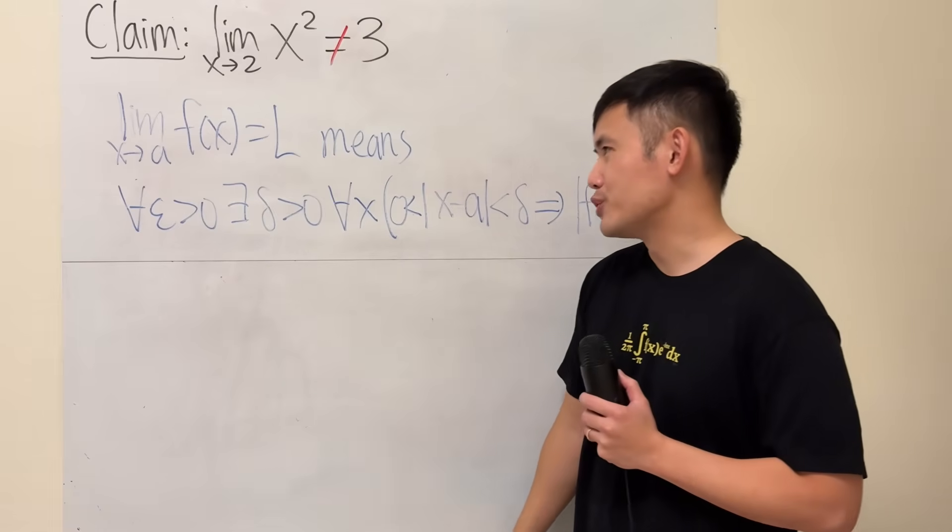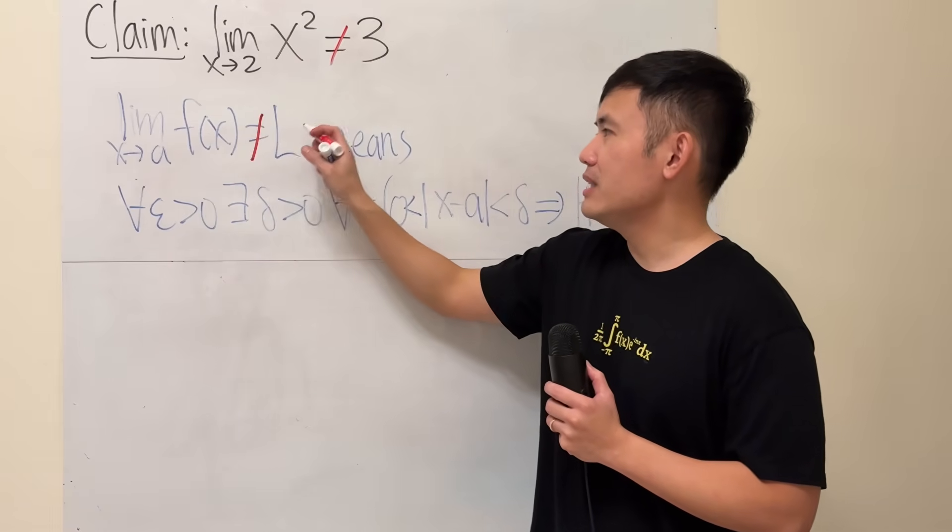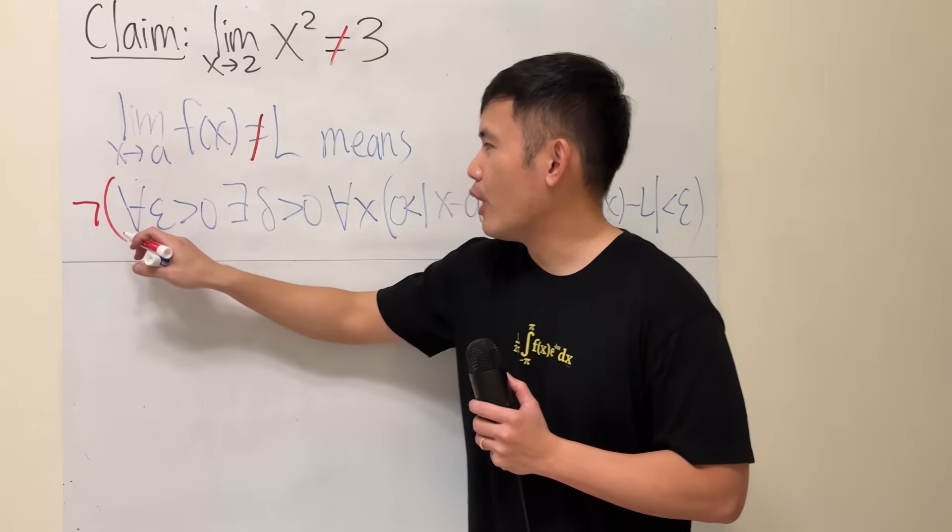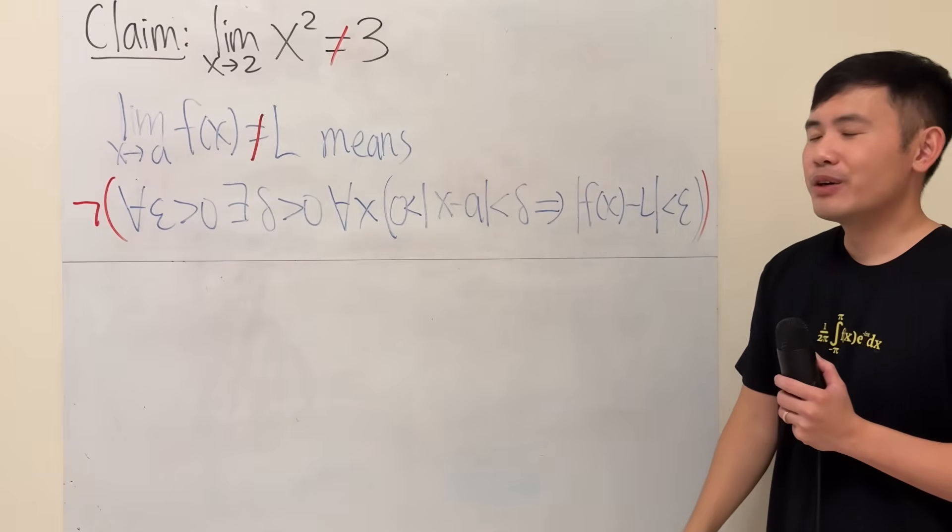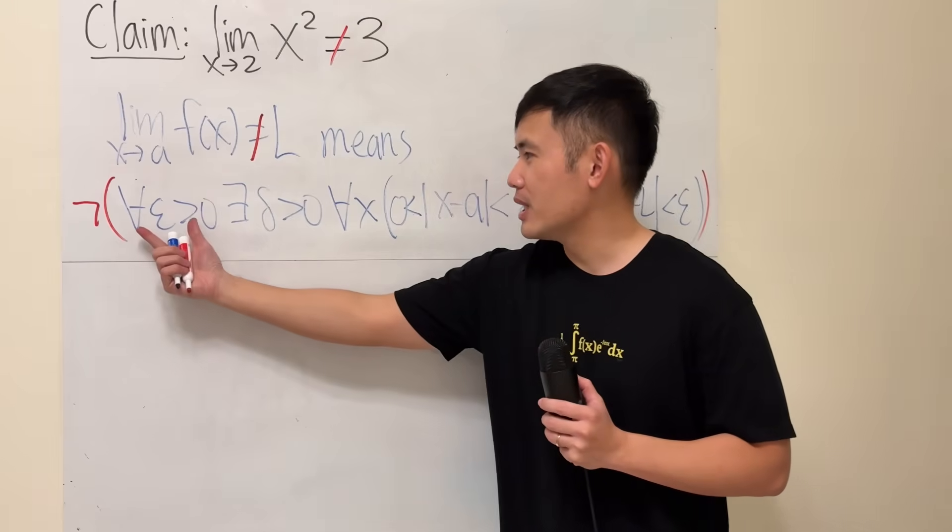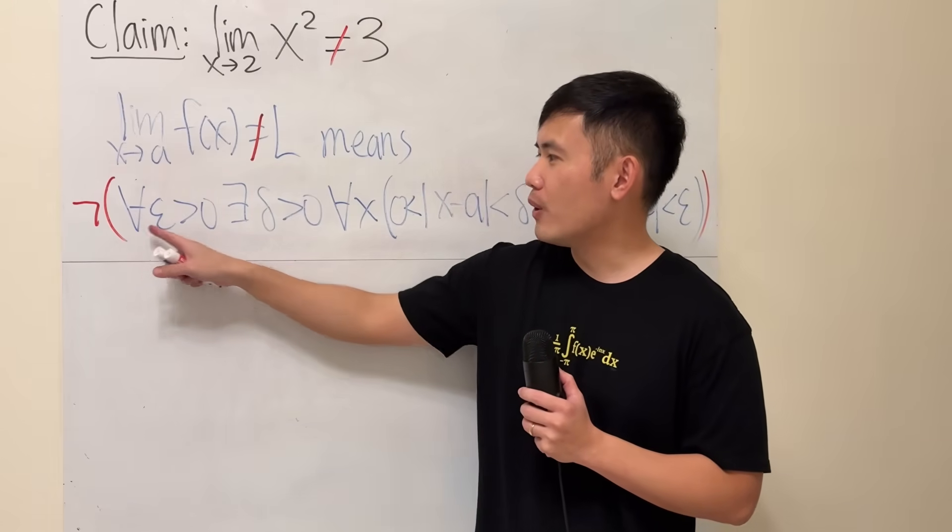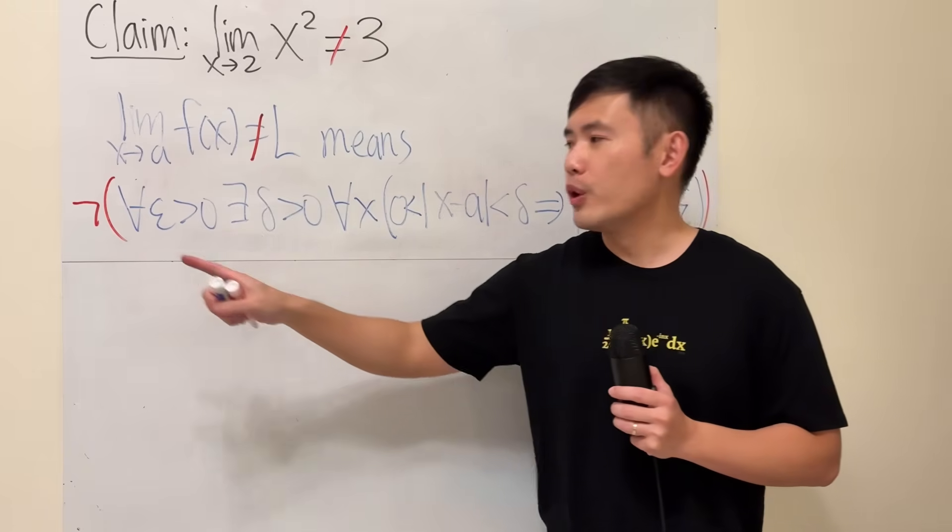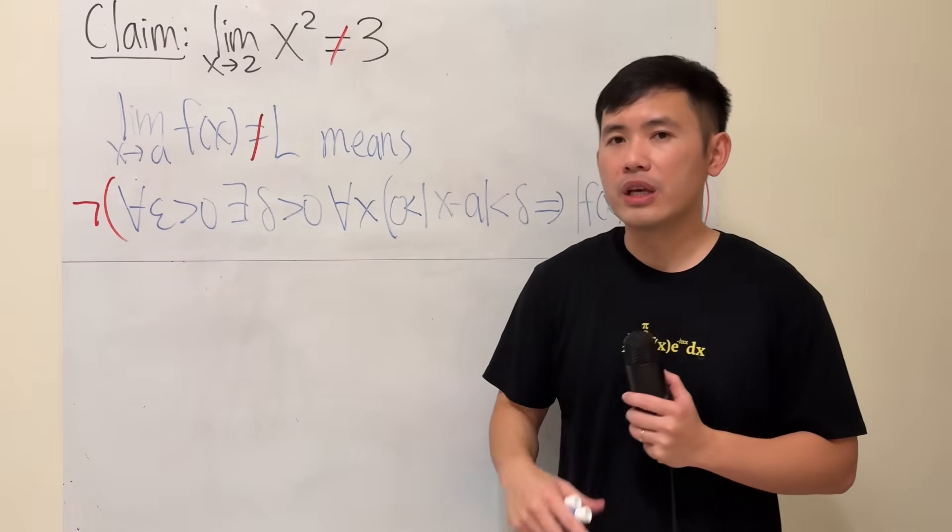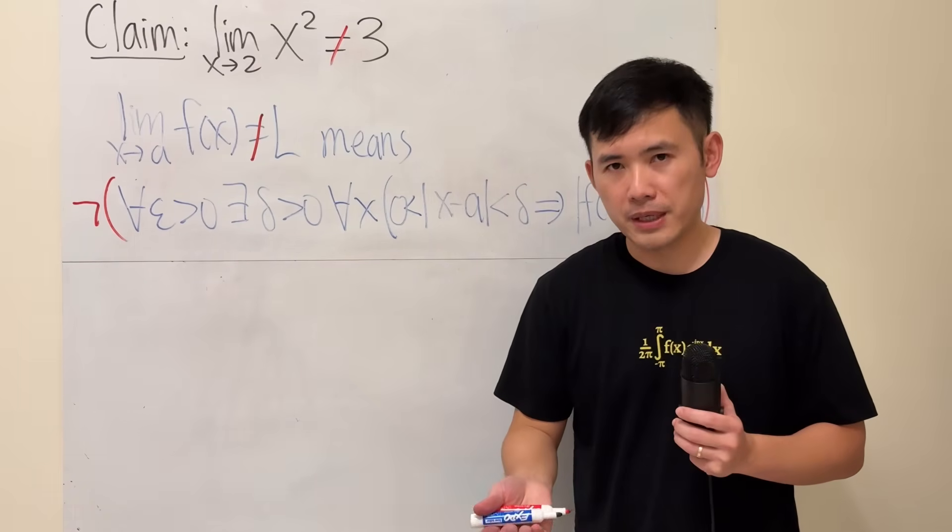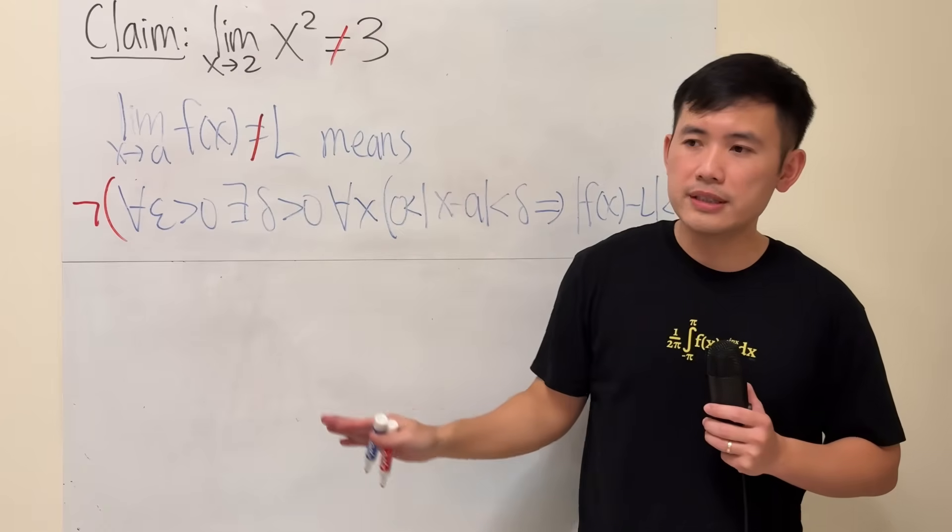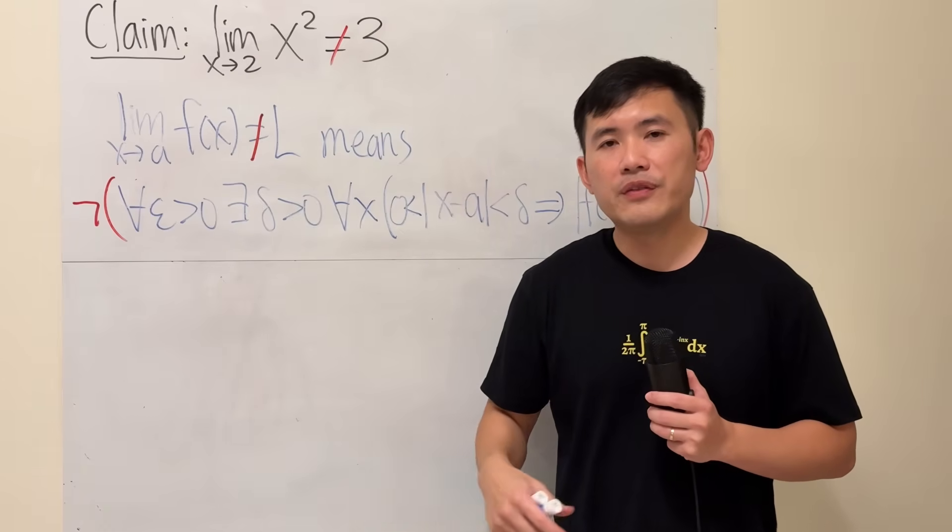So this right here is a usual epsilon delta definition for limit being equal to L. Now, we are going to show that this right here is not equal to L, which means that we are going to do the negation of all these statements. What does this mean? Let's see. Firstly, this is really fun when you look at the front part. When you have for all, they exist, for all, and all that. When you negate for all, you will get there exist. When you negate there exist, you will get for all. Let me explain. For all, let's just use an example. Let's say, all the students are wearing red.